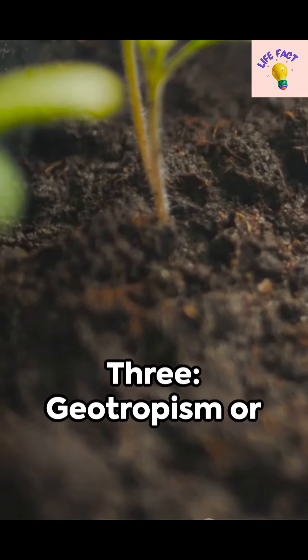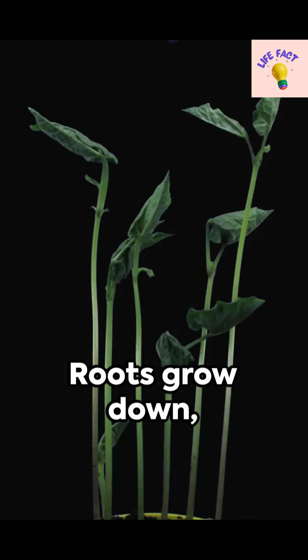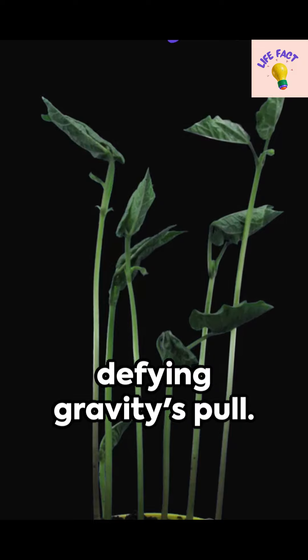Three: Geotropism or gravitropism is a response to gravity. Roots grow down while shoots grow up, defying gravity's pull.